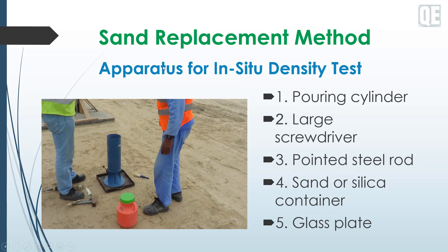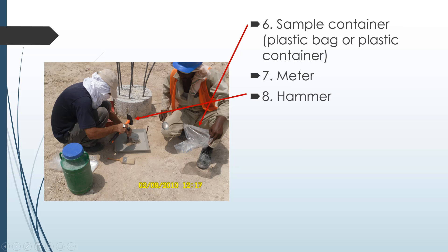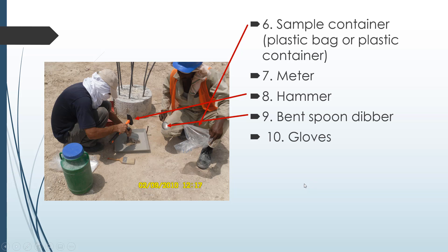We have a pouring cylinder, a large screwdriver, a pointed steel rod as you can see, a sand or silica container, a glass plate, a sample container, a plastic bag or plastic container as you can see, a meter rule, and a hammer — metal, as you can see.